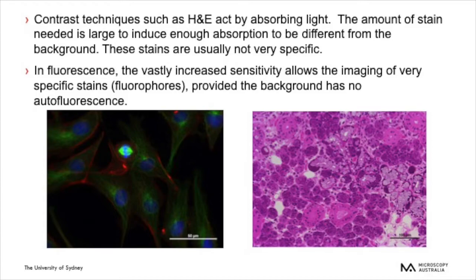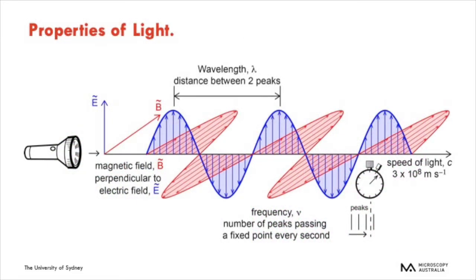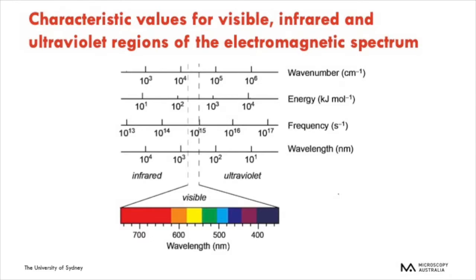To understand this, we first need to look at the properties of light. Light is a form of electromagnetic radiation consisting of an oscillating electric field with an oscillating magnetic field perpendicular to it. These oscillating fields behave like waves traveling at the speed of light. The wavelength of light is typically measured in nanometers, and this is a property that the fluorescence microscopist is interested in. The electromagnetic spectrum spans a very large range, but we are interested in the visible range. This slide is depicting wavelength, frequency, energy, and wave number.